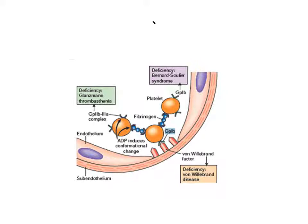Another thing you can see in this picture: three platelets are combining with each other through a molecule — shown in blue — which is fibrinogen. This fibrinogen attaches to the platelets in the presence of another protein. There is another receptor on the platelet surface known as the GP2B3A complex. This complex facilitates the binding of fibrinogen between platelets.